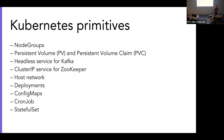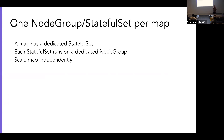A StatefulSet is a Kubernetes primitive that helps you manage stateful applications. We dedicate one node group and one StatefulSet per map. So Map A and Map B each have a certain number of brokers with a specific instance type. Each map is translated into a node group — an ASG — and a StatefulSet. We don't share any topics or partitions between these two StatefulSets, so we can roll them out completely in parallel with no offline partitions at any time. We can also scale them independently.